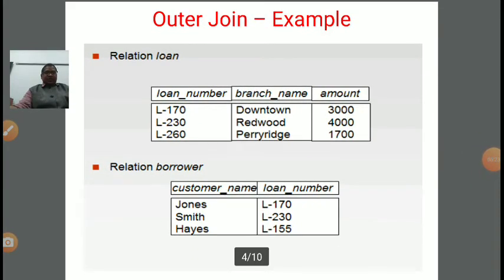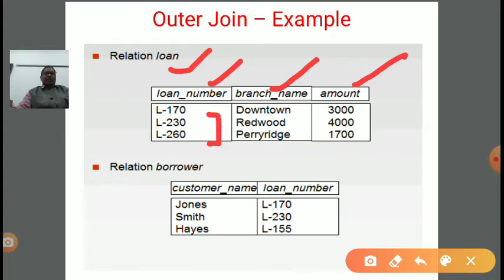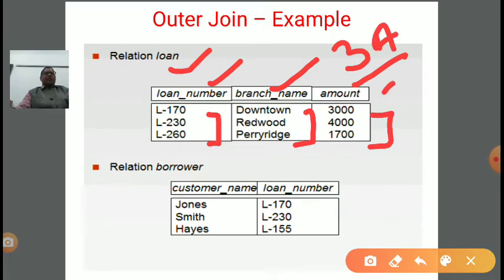Now an outer join example is listed here. There are two relations. The first relation is named 'loan' with three attributes: loan number, branch name, and amount. There are three tuples: L170 downtown 3000, L230 Redwood 4700, and L260 Parish 1700.